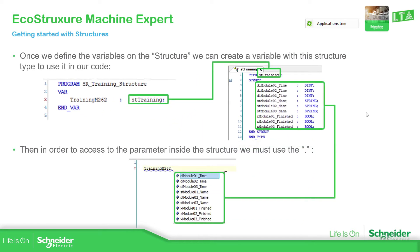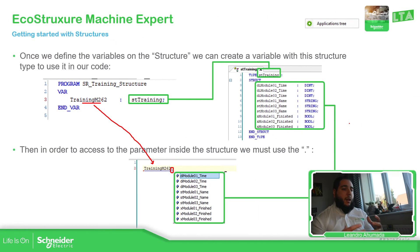Once you have defined the structure, you just need to create a variable and assign it the name of the structure you created. Then, if you want to use the variable in your code, you start with the GBL prefix, then a dot, then the variable you have already created, then dot again — and you will see the complete list of variables inside. That's basically how you can use the structures on the software.